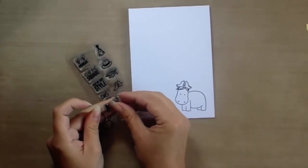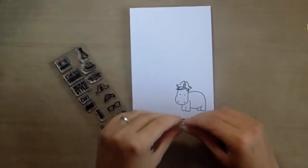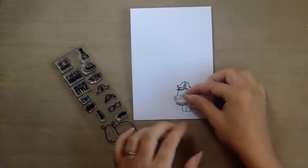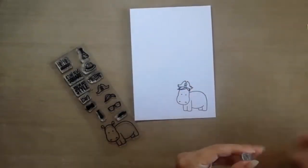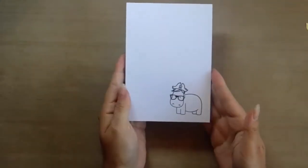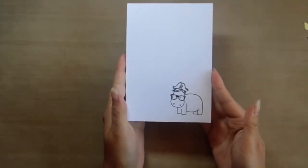So if you would like to add the glasses, you could just add that as an afterthought afterwards and just stamp them on. And that is how we mask off an image to add accessories.